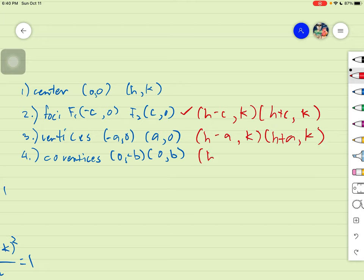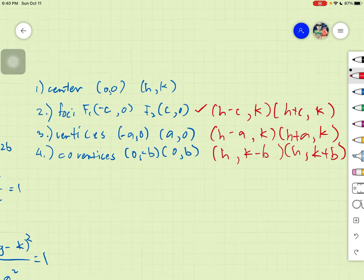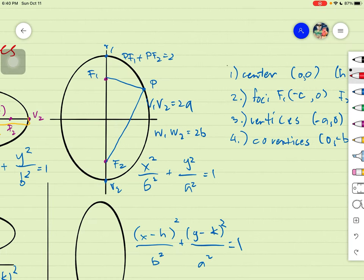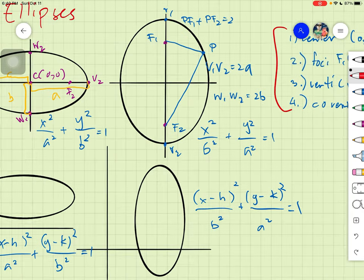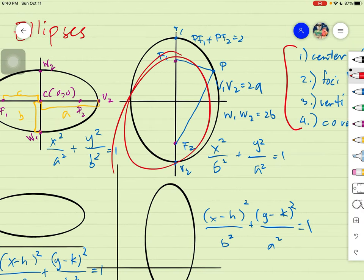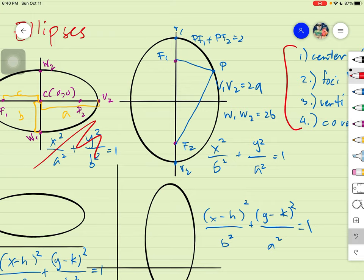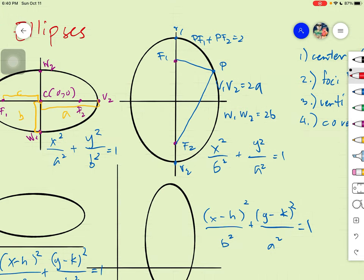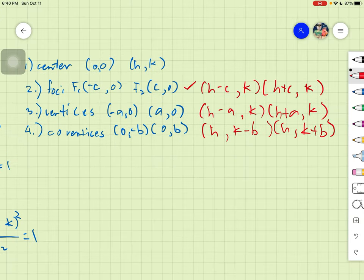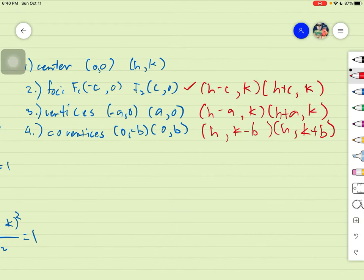And as for your co-vertices, it's just simply h, since that is zero. k minus b, and you will have h, k plus b, and so on. So it will change depending on your given. And the values of these four will change depending whether it is a vertical or your horizontal one. So this would be your values. So it will depend on you whether your given will be this one, or this one.